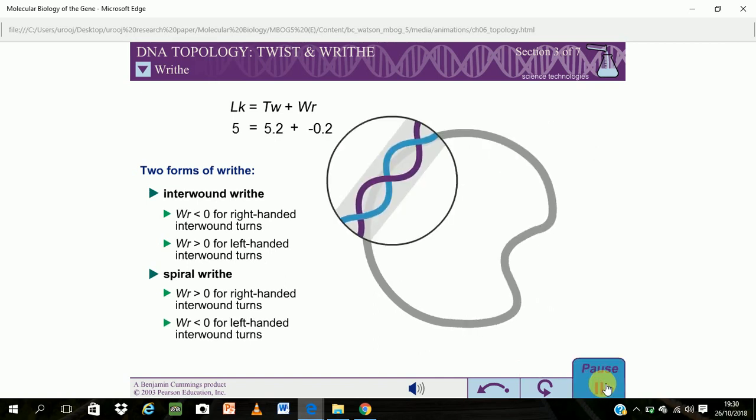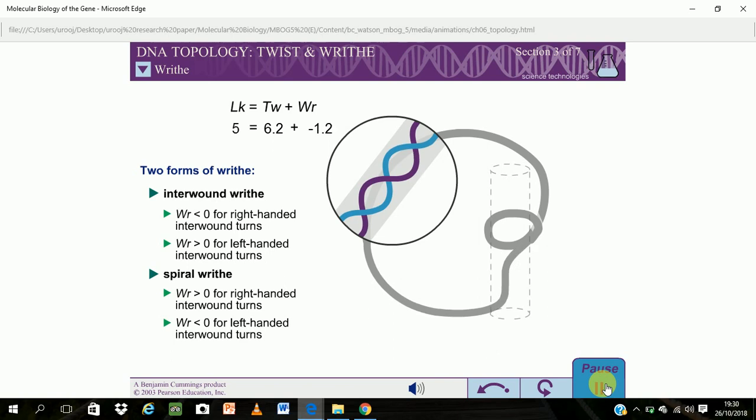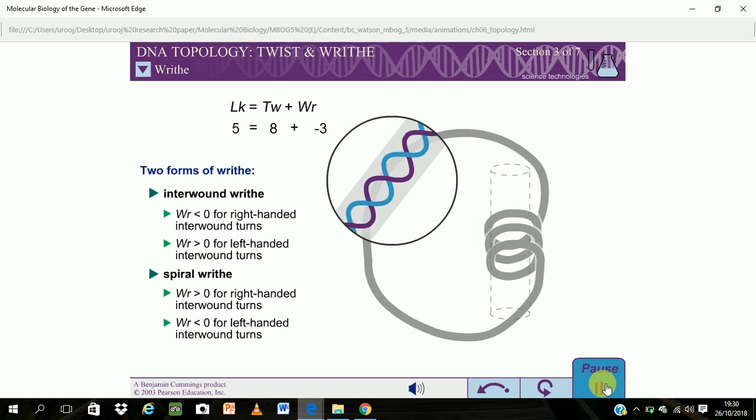If right-handed DNA writhes to form a left-handed spiral coil, the DNA must twist to accommodate the writhe. Therefore, left-handed spiral turns are assigned negative writhing numbers. Again, this is the opposite of left-handed interwound turns.